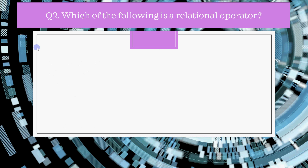The second question is: which of the following is a relational operator? You have four operators given. The first operator is '&&' (AND), which combines two conditions — if both are true the result is true, otherwise false. That is a logical operator. The second is the arithmetic right shift, which comes under bitwise operators. The third is the less-than sign, which comes under relational operators — its result is always true or false. The fourth is multiplication. So the correct answer is the less-than sign.